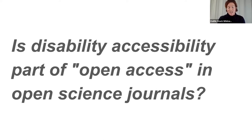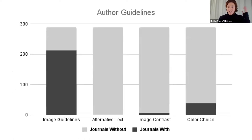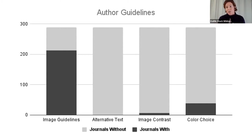I'm showing a bar chart — if the journal had this element in their guidelines, the bar is black; if it didn't, the bar is gray. Out of 300 journals, over two-thirds had some requirements for images. But literally no journal of the 300 required alternative text for images, and very few required high contrast images. The only element with any notable uptake was around 30 journals — about 10% — including consideration of colorblind friendly palettes.